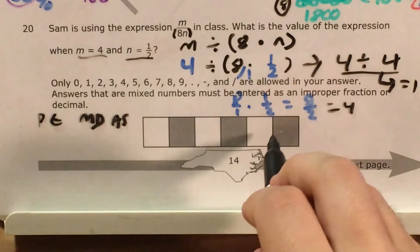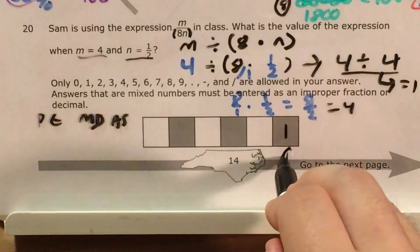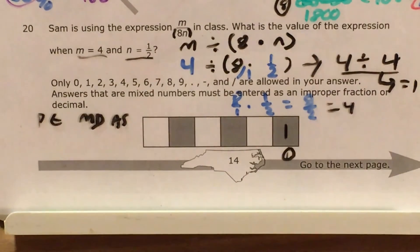So since my answer is 1, I come down to my grid boxes. I write the number 1. I find the 1 bubble underneath it and I bubble that in. And that's it.